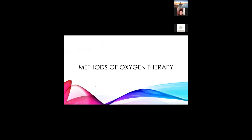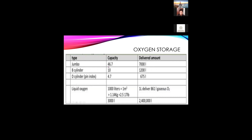Regarding methods of oxygen therapy — you can see the oxygen supply situation. We have jumbo cylinders, B cylinders, and D cylinders, and liquid oxygen separately. Jumbo cylinders contain about 46.7 liters of liquid oxygen. One liter of liquid oxygen delivers 861 liters of gaseous oxygen. So 46.7 liters gives about 7,000 liters of gas; a 10-liter cylinder gives 1,200; a 7.5-liter gives 675.